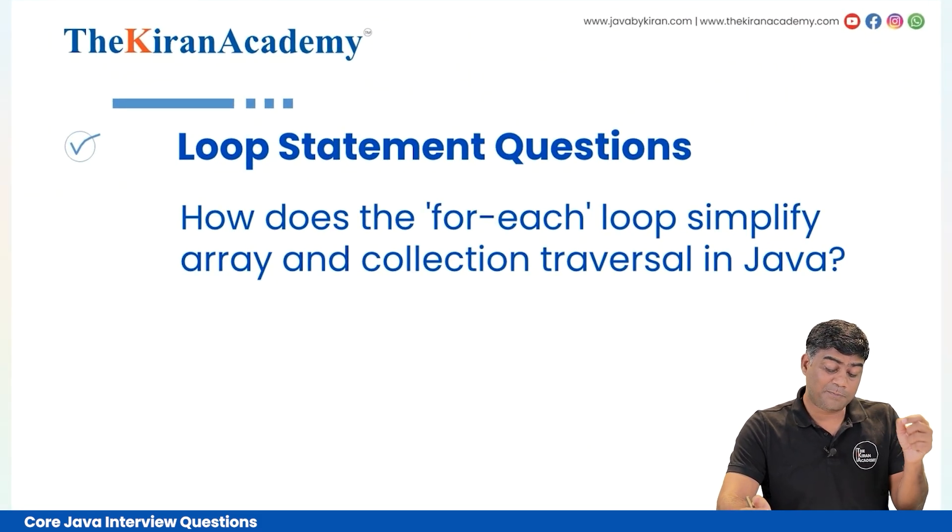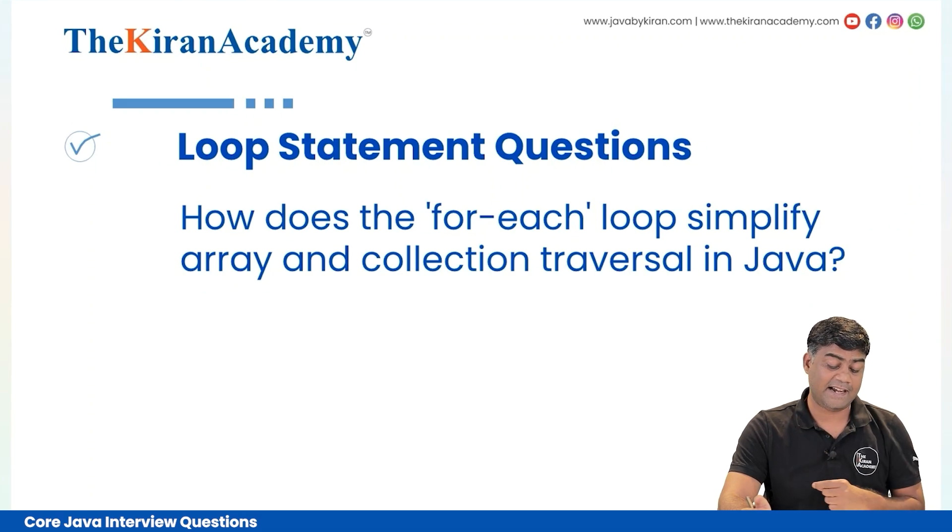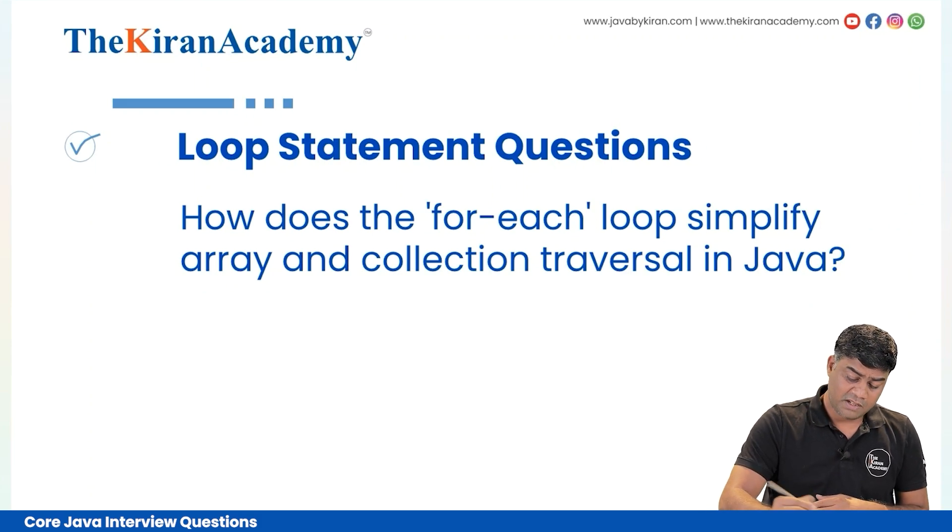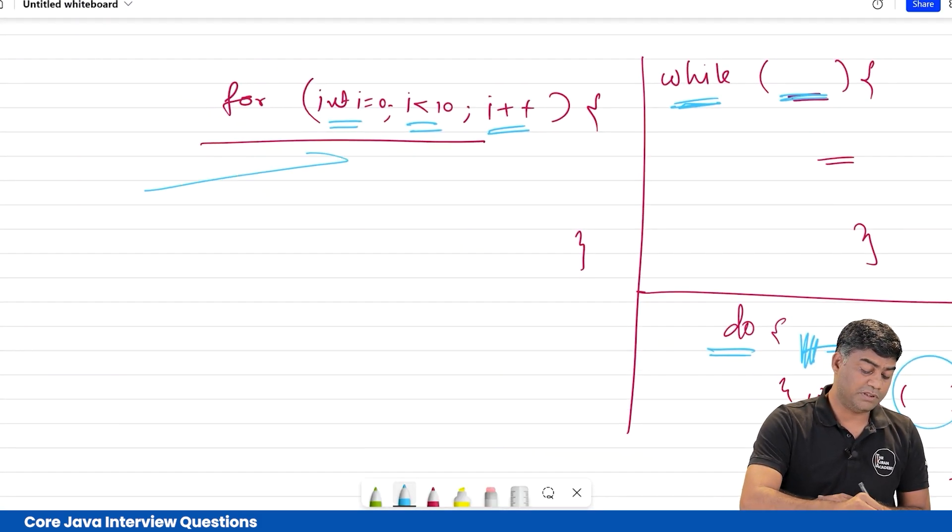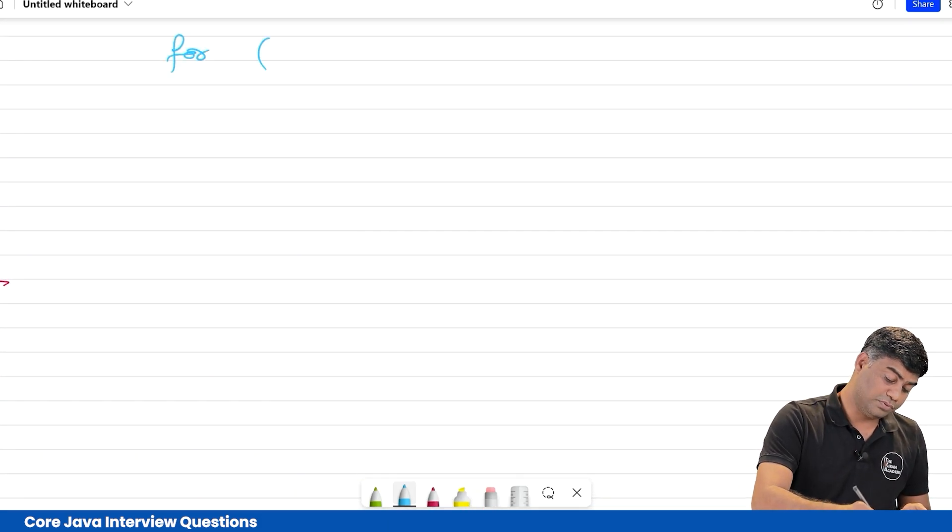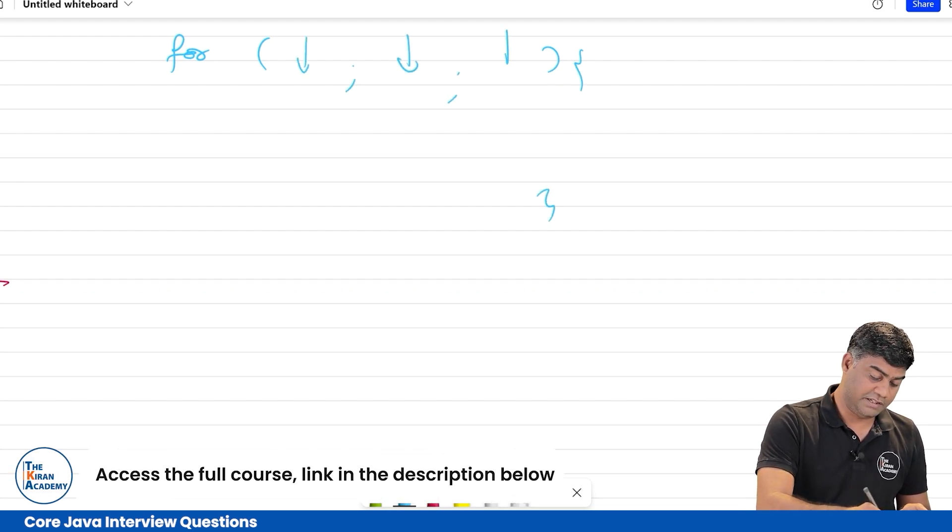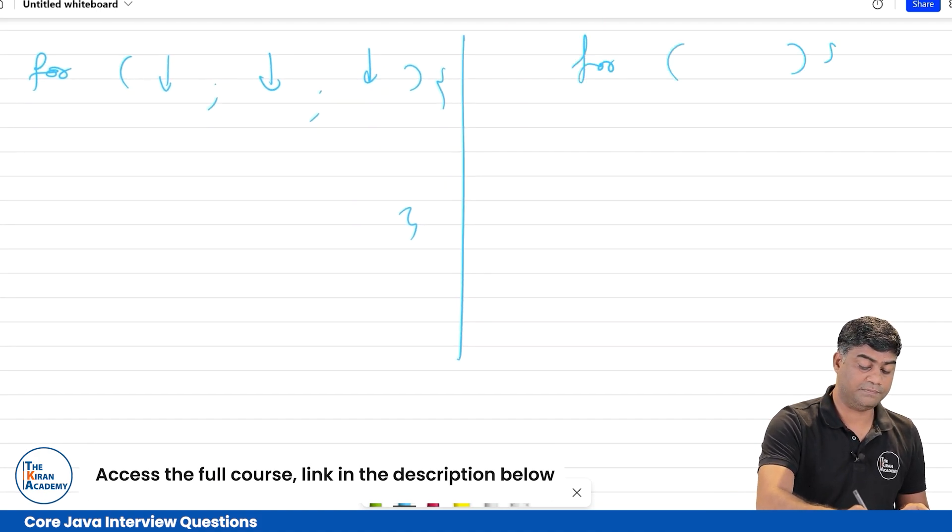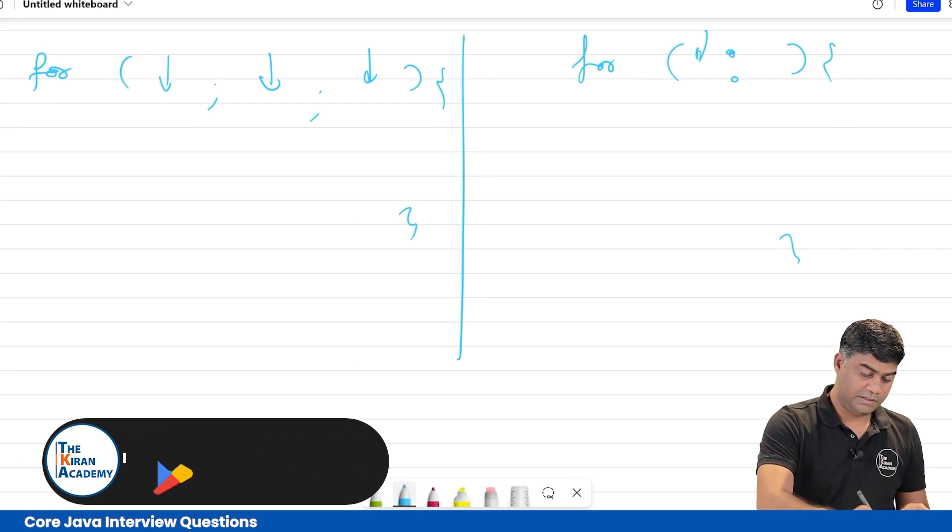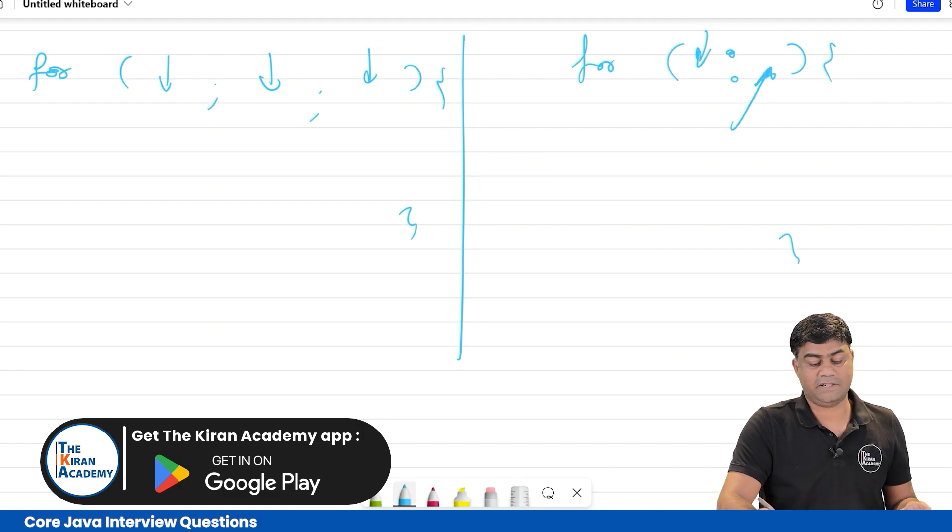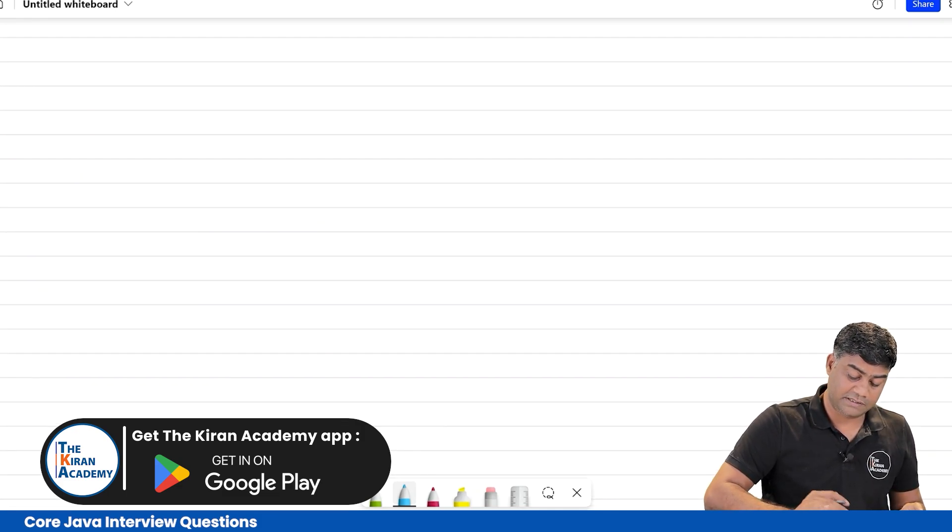Next question: how does the for-each loop simplify array and collection traversal in Java? It's a very important question. For loop, you know three things you need to write: initialization, condition, and increment. Whereas in for-each loop, you will have only two things: colon will be there, the data type you want to use, and the array or collection.